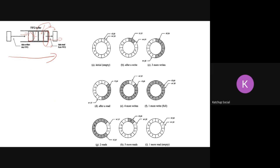Typically, FIFOs are designed with a circular kind of pointer. You increase the pointer, and once it reaches the maximum value, it automatically goes back to zero. For a FIFO, you will typically have a RAM where you read or write data.